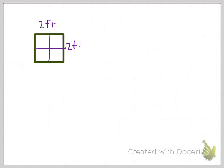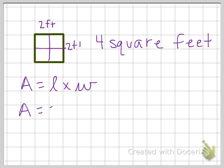We would say that the area is four square feet. We find the area by multiplying the two sides together. So the formula for area is A equals length times width. So for this square, area equaled two times two. So the area was four.